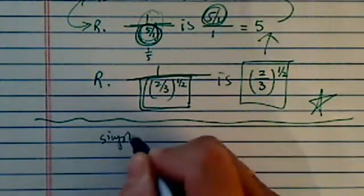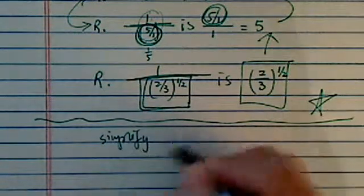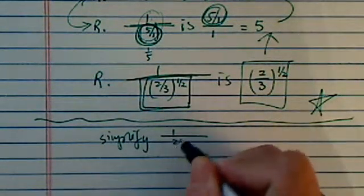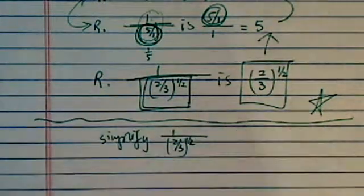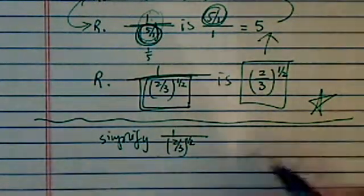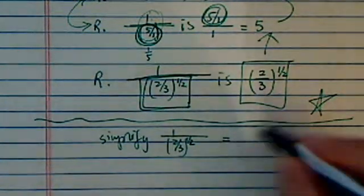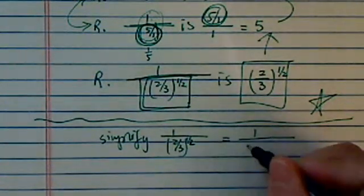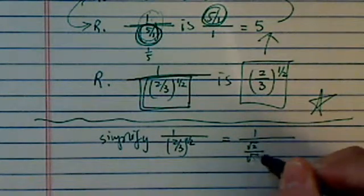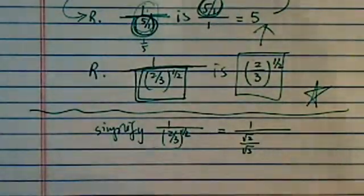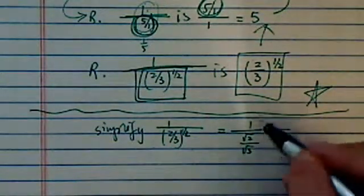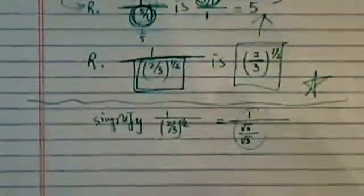Well, first thing you have to do is we've got to simplify 1 over 2 over 3 to the half. The reason we want to simplify is once we simplify, we can reverse top and the bottom. So let's take a look at what do we have to do for this one. Let's write in a radical form. Radical 2, radical 3. That's what the 2 over 3 to the half power means.